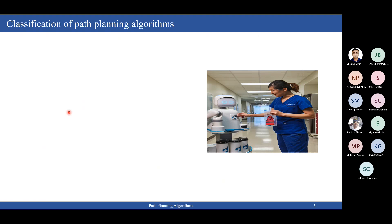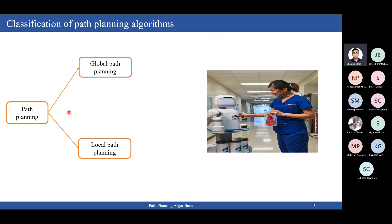Path planning algorithms are classified into two types. One is global path planning and the other is local path planning. Global path planning, as the name suggests, means we already have a predefined map of the environment with static obstacles that are not changing with respect to time. So how we define a path from one point to another — from start to goal position — is global path planning.